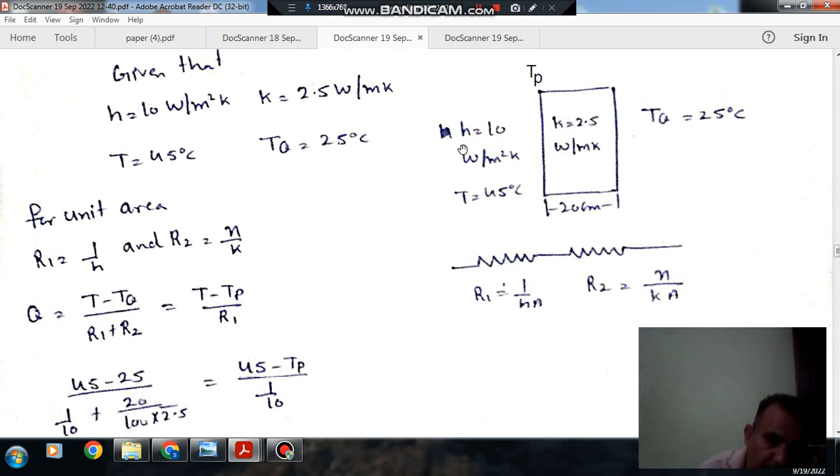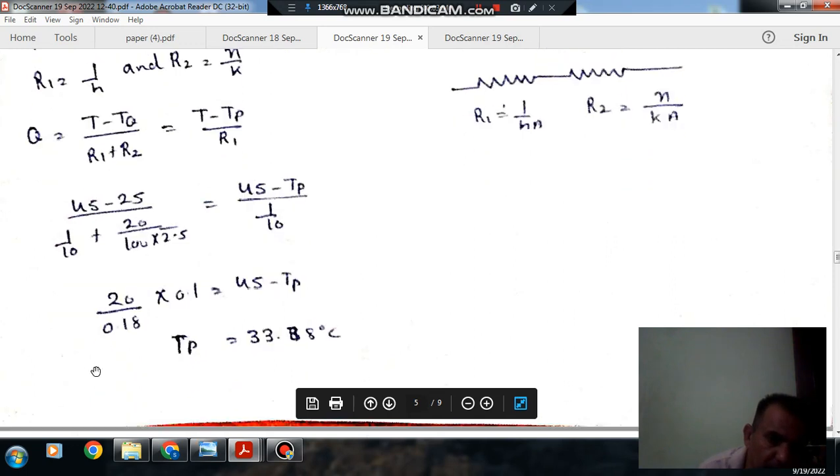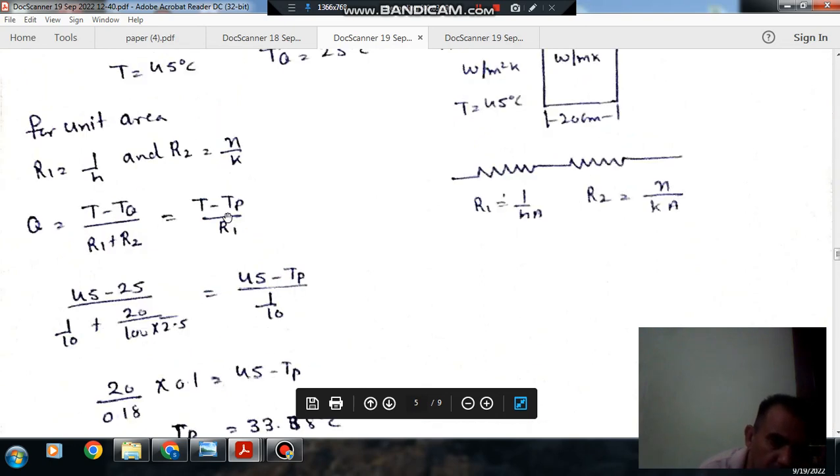When we take heat transfer from fluid to surface Q, we take resistances R1 plus R2 and temperatures T and TQ. 45 minus 25 divided by 1/10 plus 20/100 divided by 2.5 equals 45 minus TP divided by 1/10. From this, TP comes as 33.88 degrees Celsius.